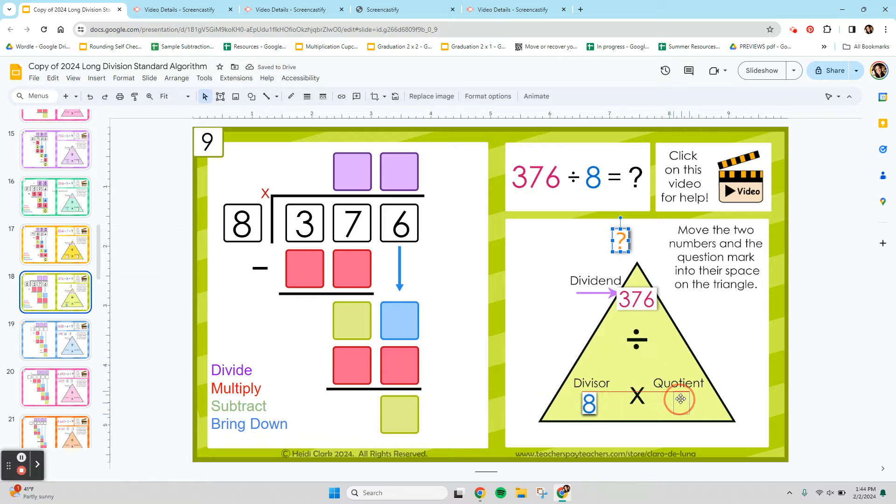376 is our dividend. We're dividing it by 8, so that's our divisor. And your answer that we put up top is the quotient. Imagine if you had 376 pennies and you're putting them into 8 buckets. The quotient is how many are going to be in each.